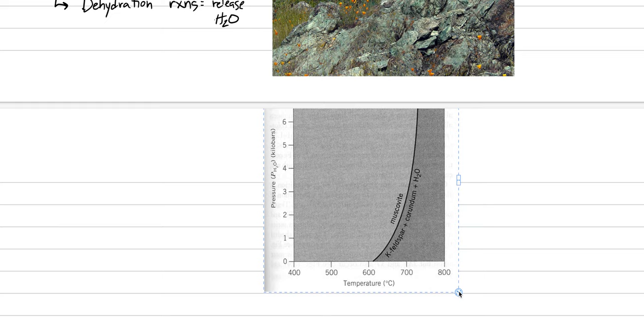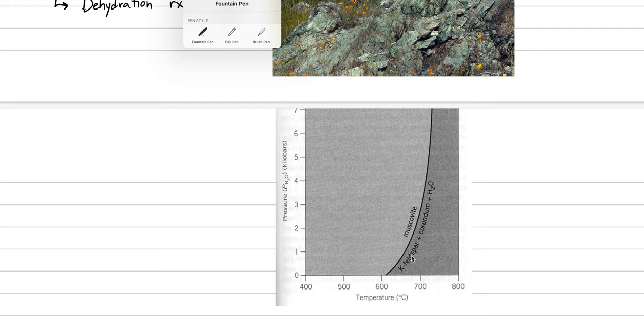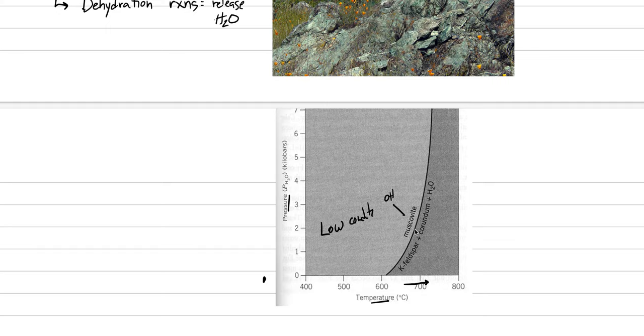And so knowing that the micas are the source of that water is a really important thing. Let me just show you this example from the textbook showing a dehydration reaction. Look at our x and y axis. Here's temperature and here's pressure. So at the Earth's surface, we're way down here. And at low conditions, this phase diagram tells us that muscovite is stable. And muscovite is a mica that can have OH. But if plate tectonics and metamorphism drives you to higher temperatures, or in this case lower pressures, we will cross that phase boundary and muscovite is no longer stable. It breaks down into potassium feldspar and corundum, and it releases a bunch of water in the form of a dehydration reaction. That is a big significance of the phyllosilicates.